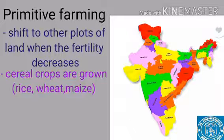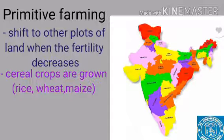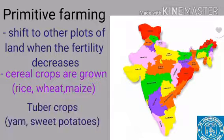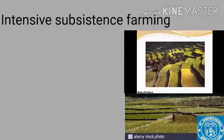Crops like cereals — rice, wheat, and maize — are grown in primitive subsistence farming. Tuber crops like yam and sweet potatoes are also grown in this type of agriculture.